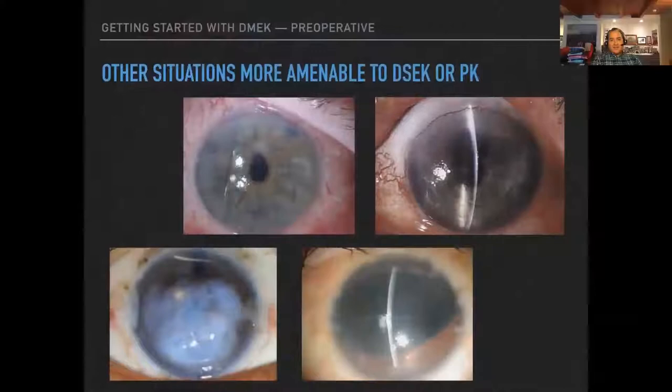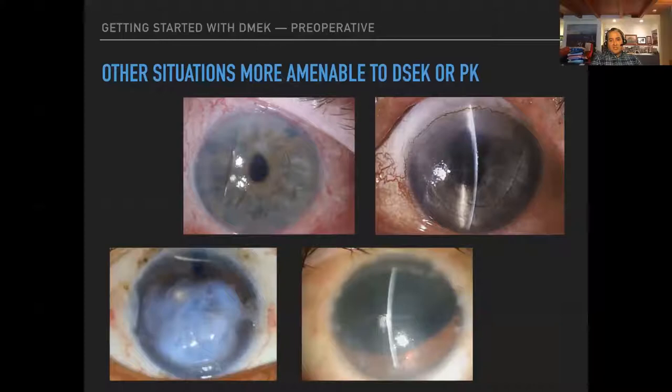Make sure that if the patient has a PCIOL, you've dilated them and confirmed it's stable — you don't want it dangling or a big rent in the PC, because the air bubble and anterior chamber manipulation could dislodge the lens. The ideal candidate: Fuchs dystrophy, mild pseudophakic bullous keratopathy, no ACIOL, minimal iris damage, good surgical view with good visual potential, and a stable PCIOL. Eyes with too much stromal scarring or an ACIOL, or very disrupted anterior segments, are better suited to DSAEK or PK.